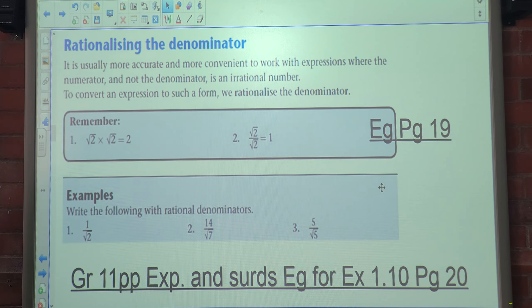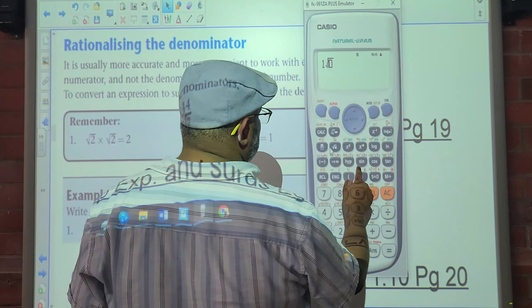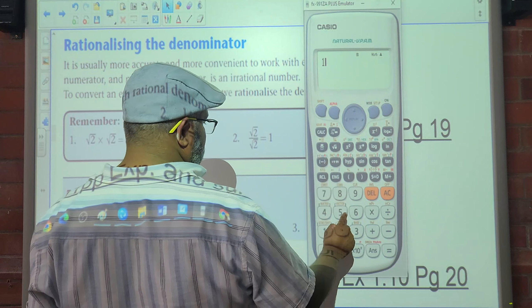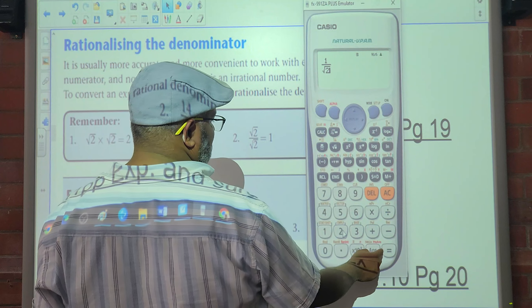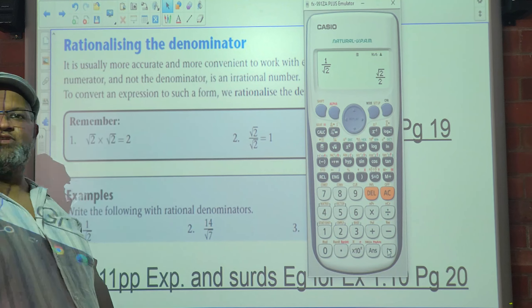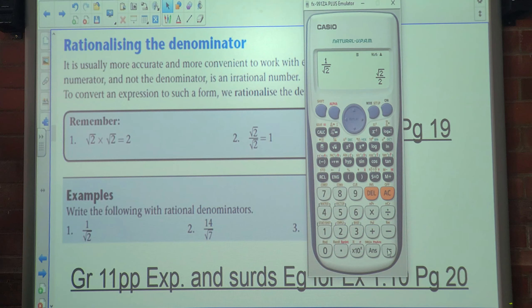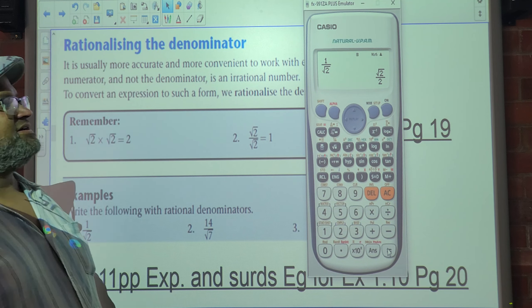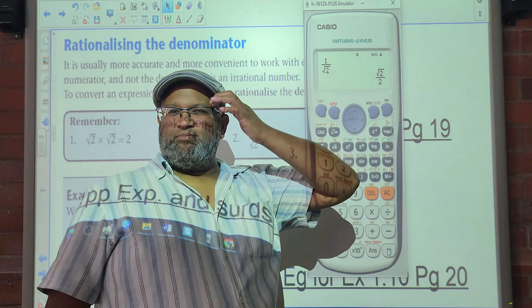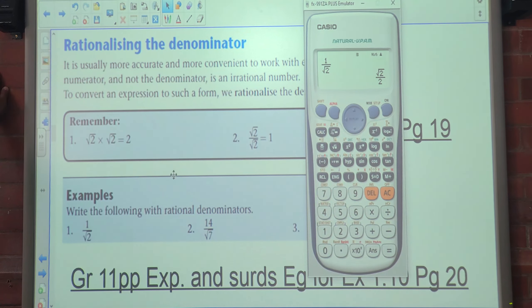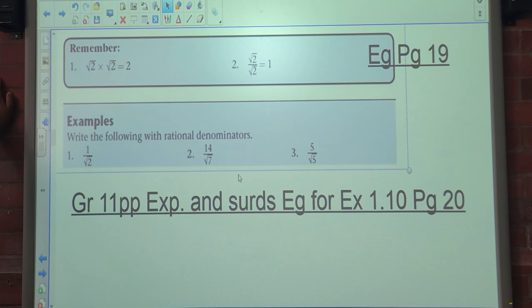So when you look at the calculator at times when we have 1 over the square root of 2 and then you get root 2 over 2, that is what we're going to look at today. Okay, how we rationalize the denominator. So the calculator won't give you the answer in radical form or in surd form.